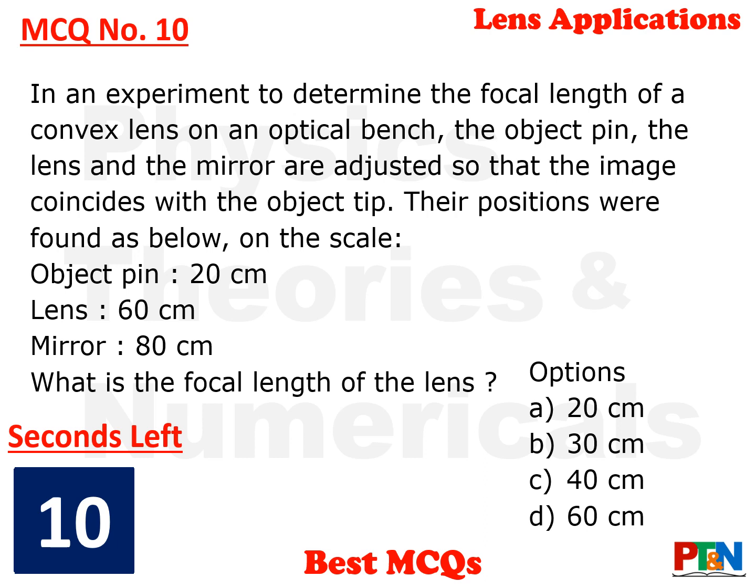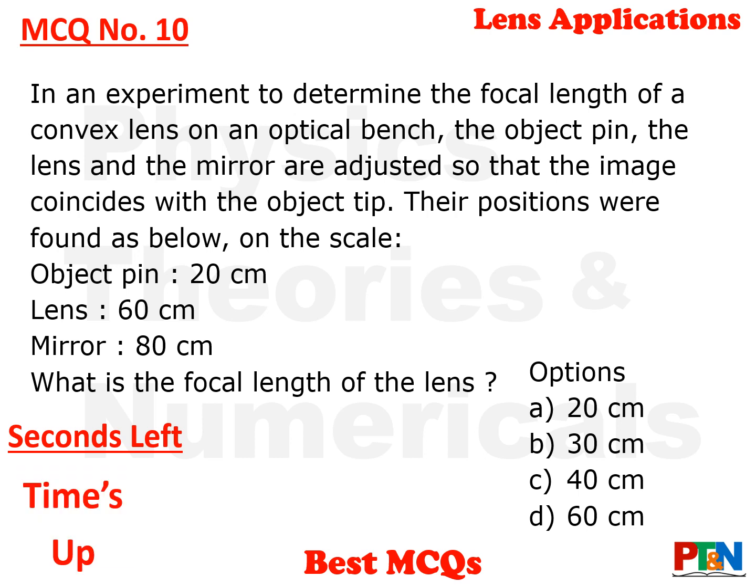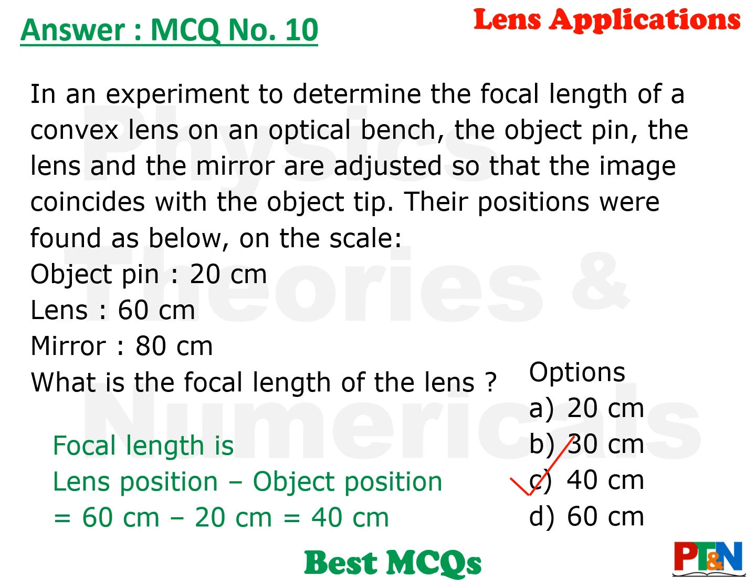Next MCQ: in an experiment to determine the focal length of a convex lens on an optical bench, the object pin, lens, and mirror are adjusted so that the image coincides with the object. The positions on the scale were: object pin at 20 cm, lens at 60 cm, mirror at 80 cm. What is the focal length of the lens? You have 10 seconds. The answer is option C, 40 cm. The focal length is the lens position minus the object position: 60 cm − 20 cm = 40 cm.